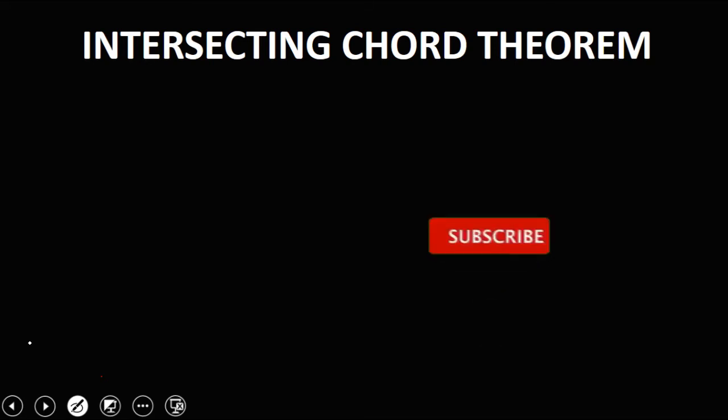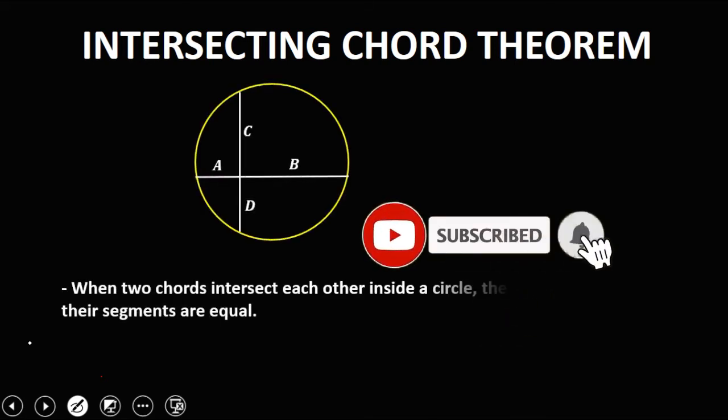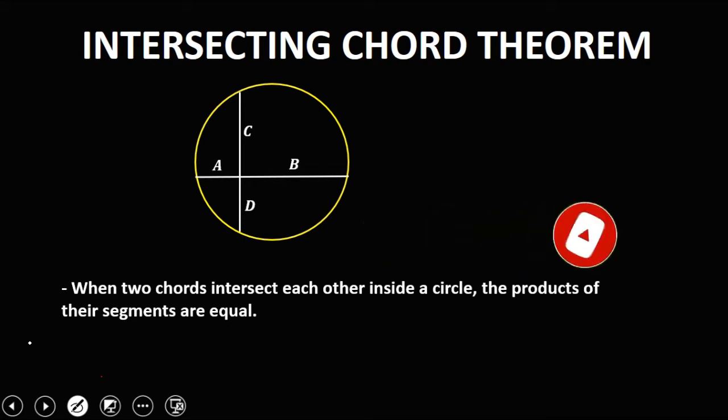Okay, so the intersecting chord theorem. We have this one: when two chords intersect each other inside a circle, then the products of their segments are equal.